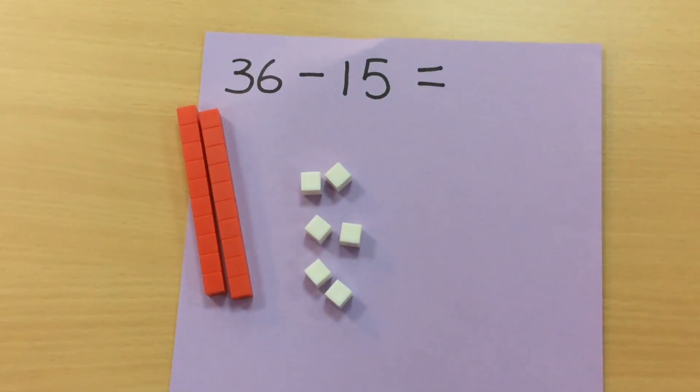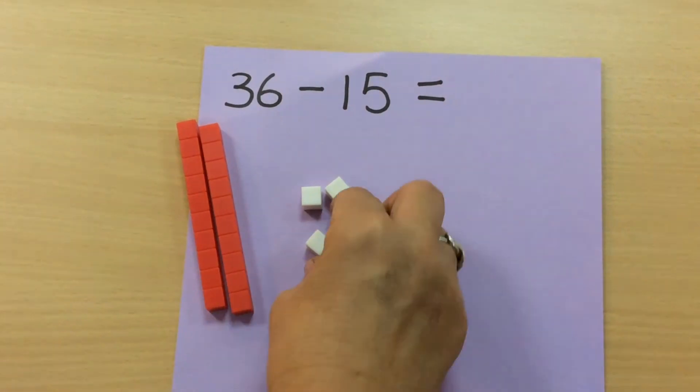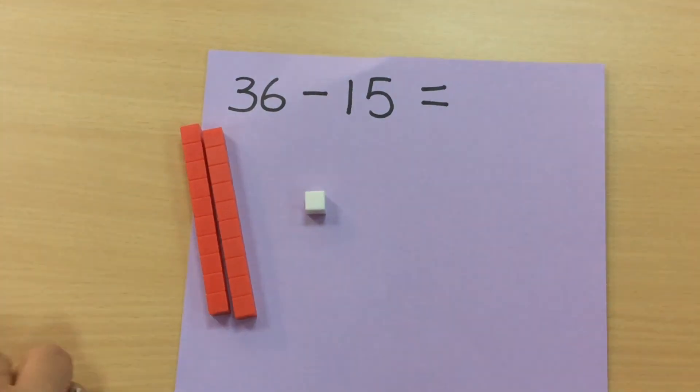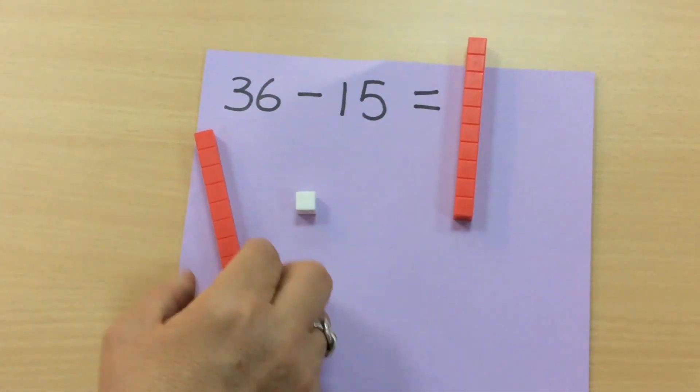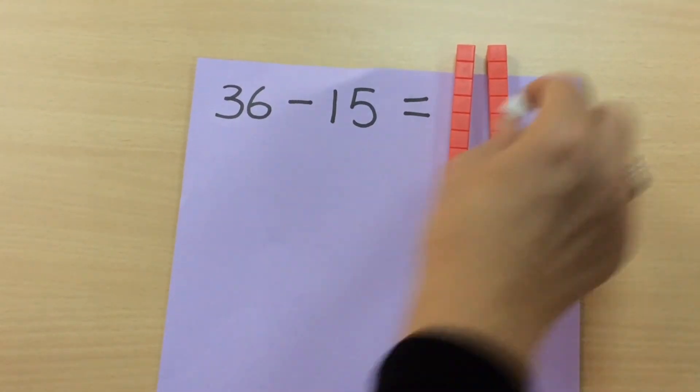So they can take away their ten, and their one, two, three, four, five ones, so then they can see that this leaves them with ten, twenty, one.